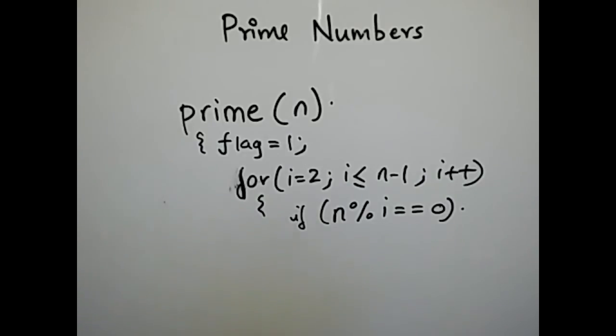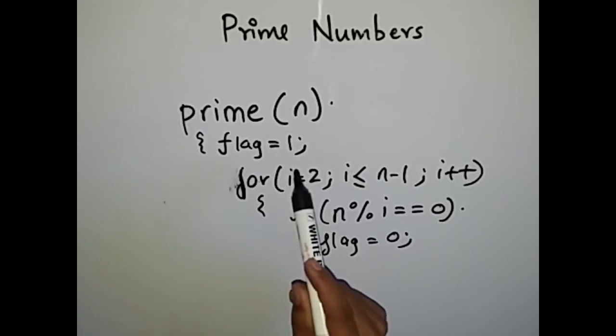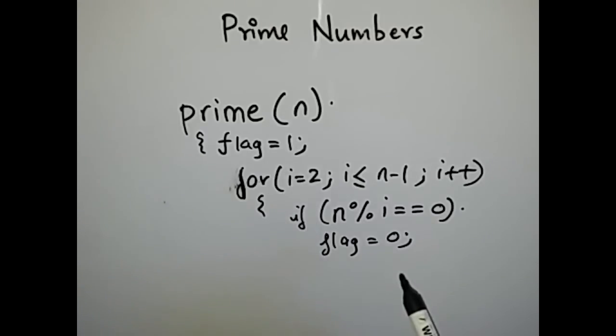So this is the logic: if n mod i is equal to 0, then we set flag equal to 0. So this means that the number is not prime.